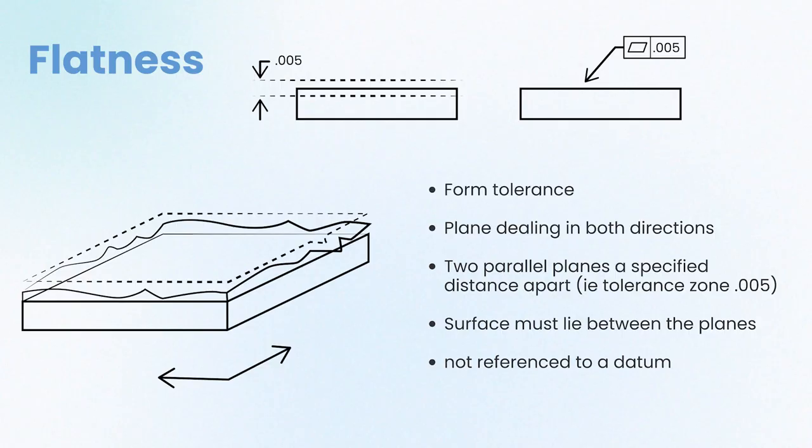Not only is Mic 6 going to be the material of choice for thin, flat parts to assist in manufacturing of the part, but it is also going to be useful when you are designing a part with a tight flatness tolerance, as it will help keep any warpage or bowing to an absolute minimum.